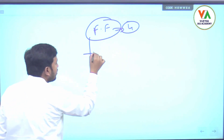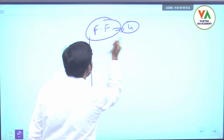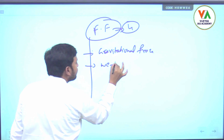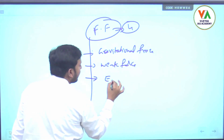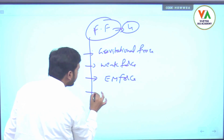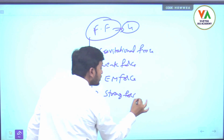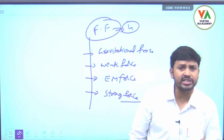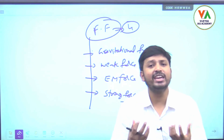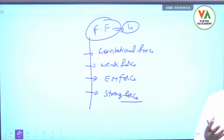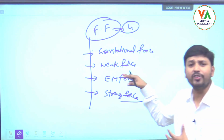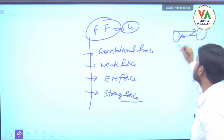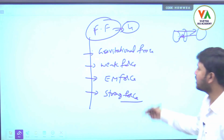Now we will see the four fundamental forces. One is gravitational force, the second is weak force, the third is electromagnetic force, and the fourth is strong force. Gravitational force is the force of attraction between any two bodies that have mass — each body tries to attract the other.